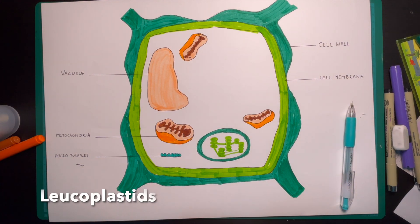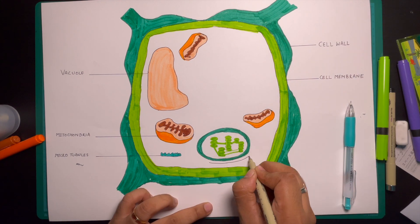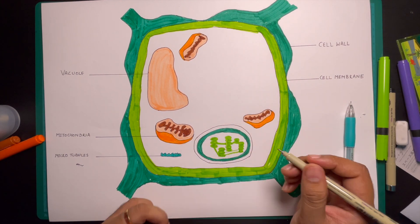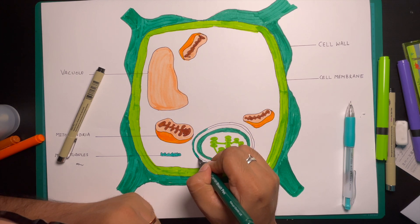Leukoplastids are pigmentless plastids in the root of plants. They store starch, protein and lipid. Plastids are of different shapes like oval, round and twisted ribbons.